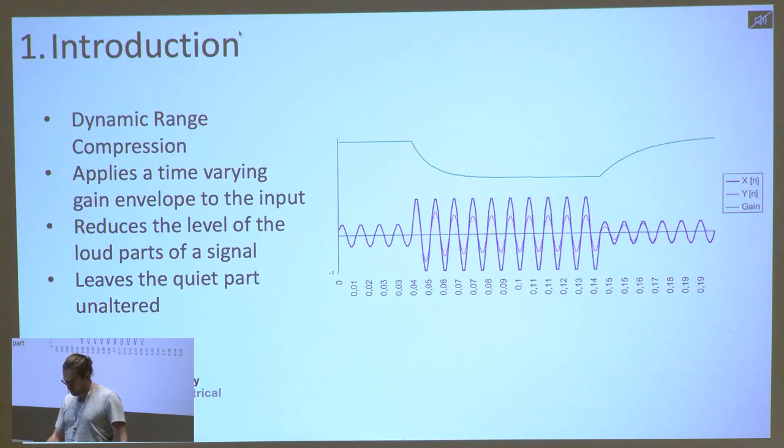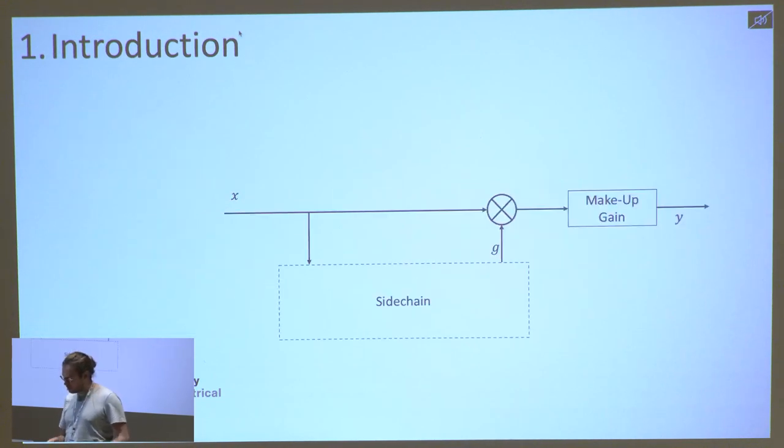There's a lot of analog and digital dynamic range compression software and devices out there. One common theme is they usually have this kind of side chain, which is going to take the input signal and use it to calculate this gain envelope, which is then applied to the signal before finally some makeup gain might be applied.